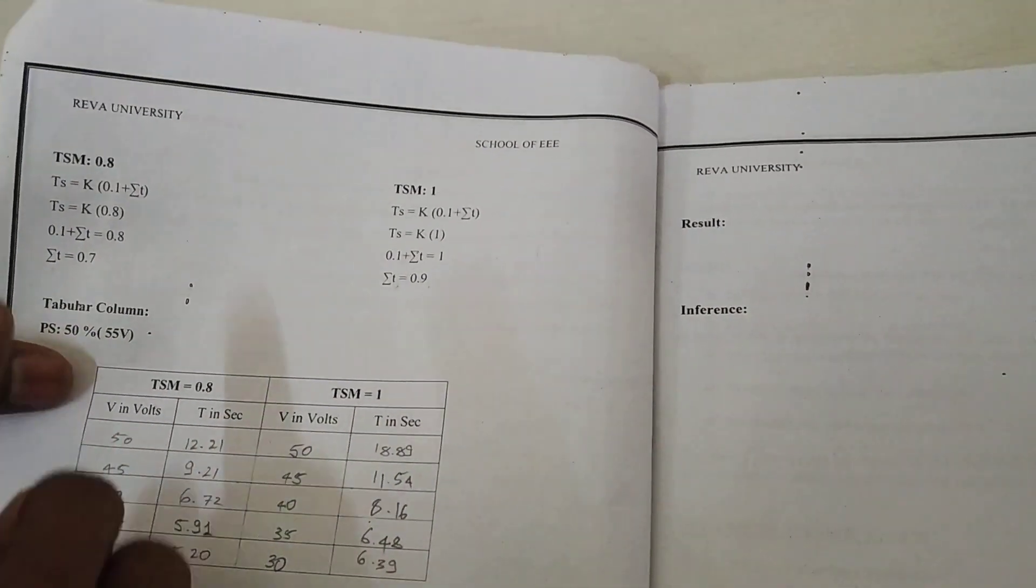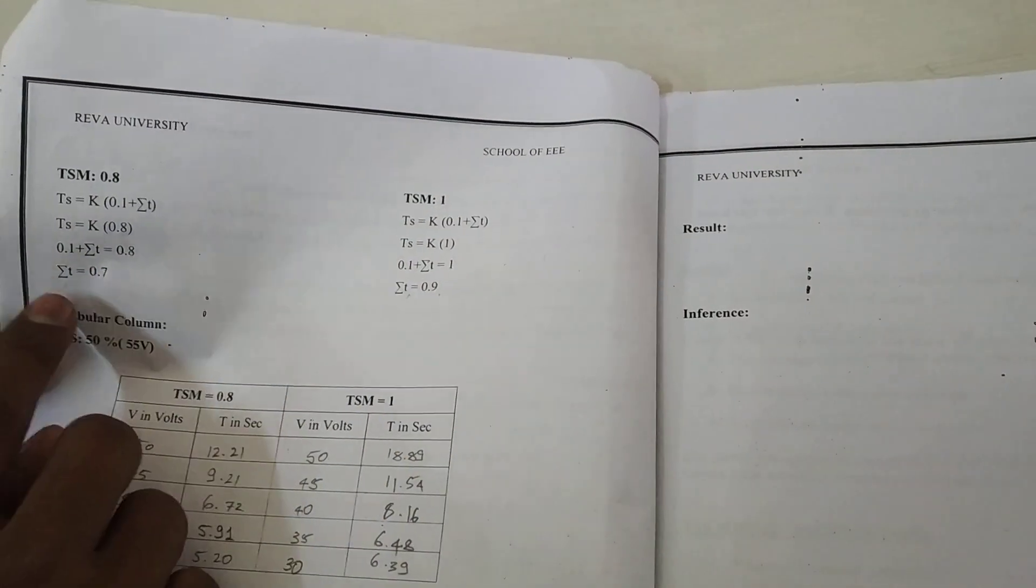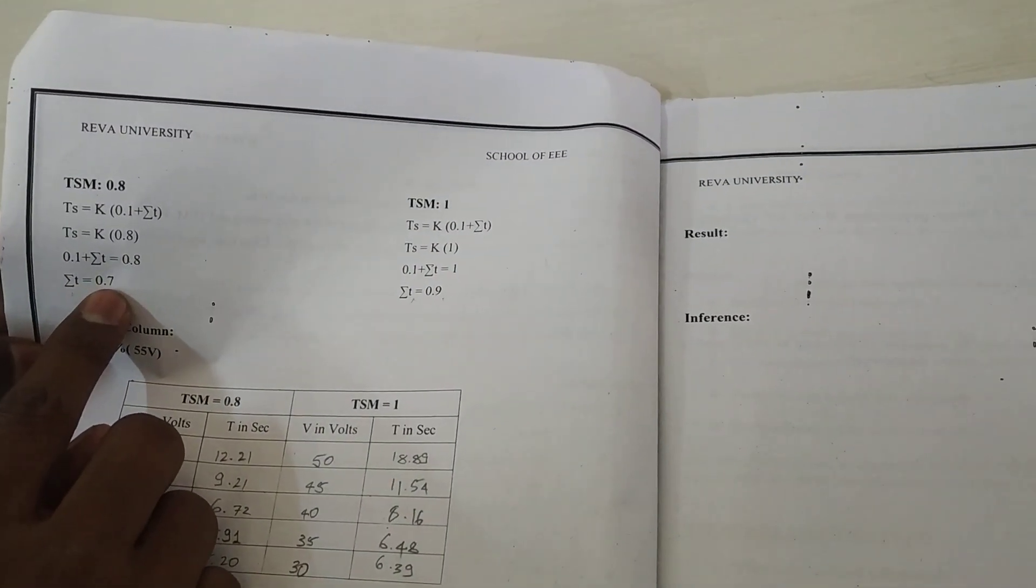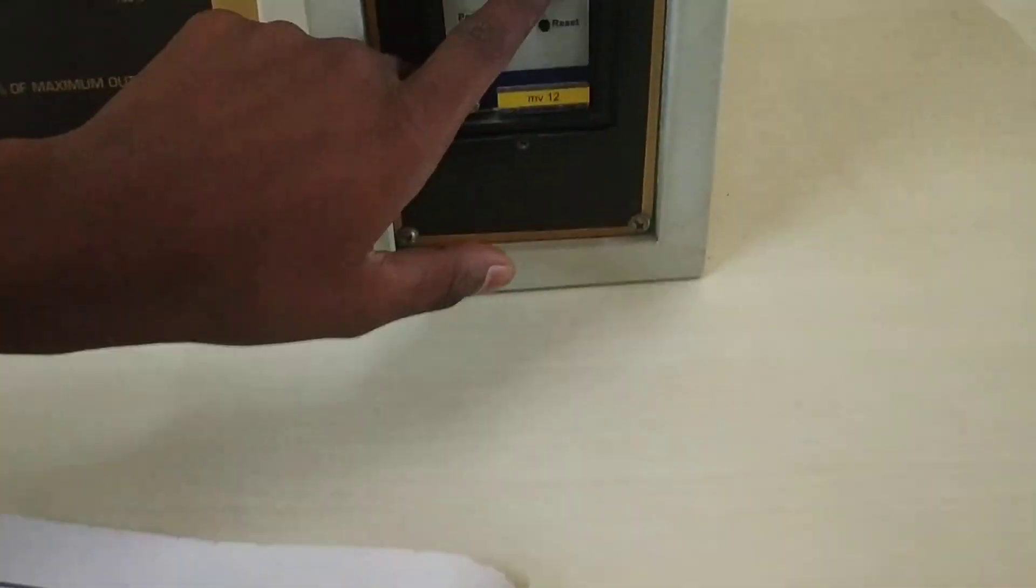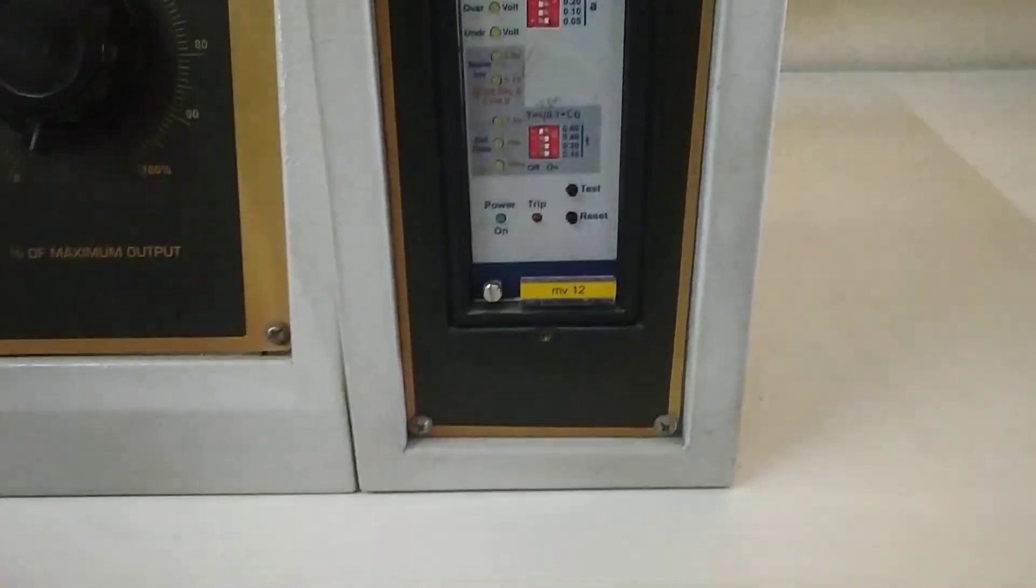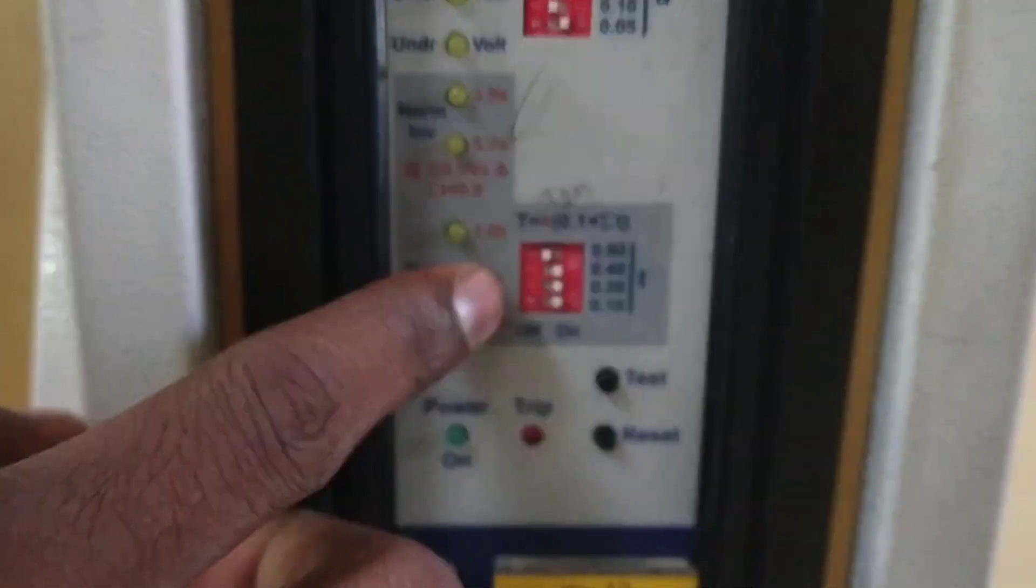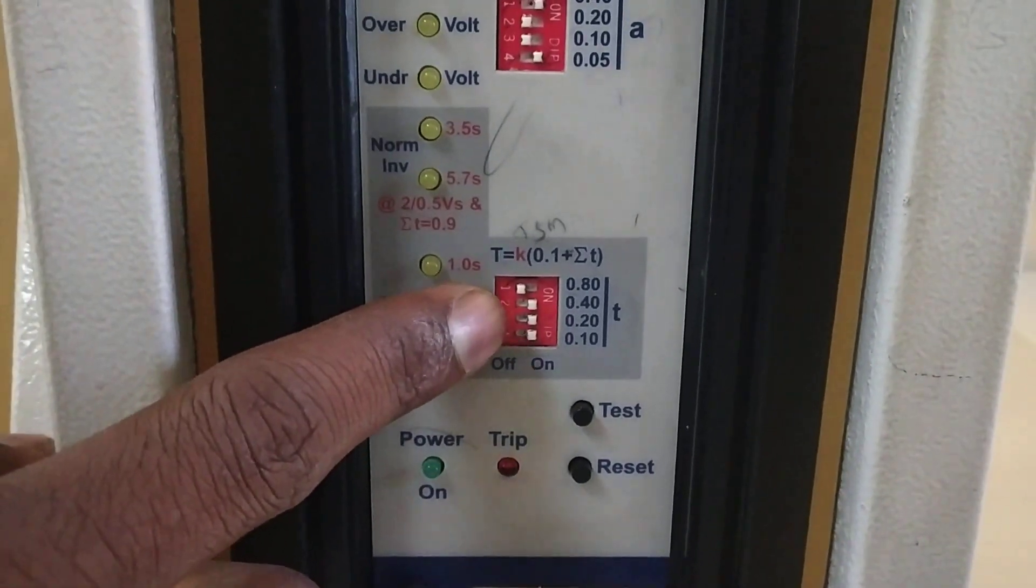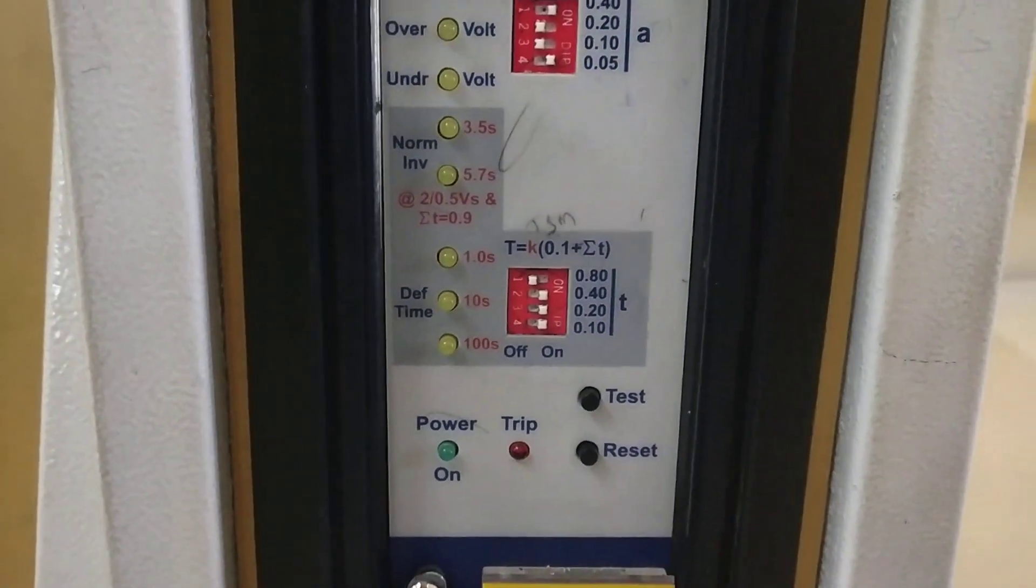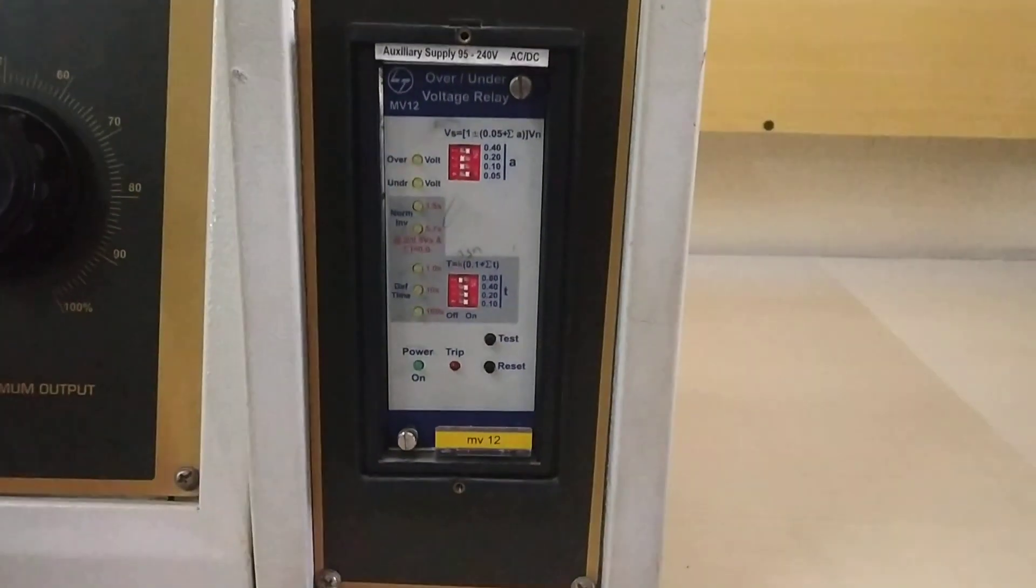First, you have to calculate for TSM equals 0.8. Even though you get summation T as 0.7 here, you think that you should set 0.7 for 0.8 first, but you should not set 0.7, you should set 0.8 instead. And for the next case, TSM equals 1, you should set 0.9.